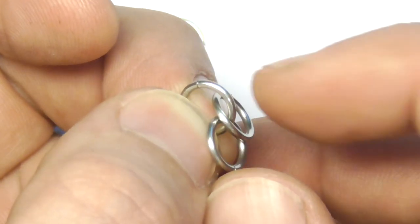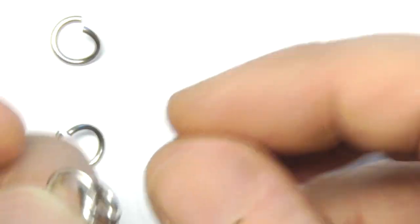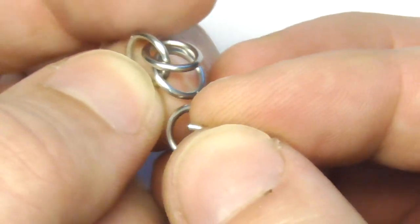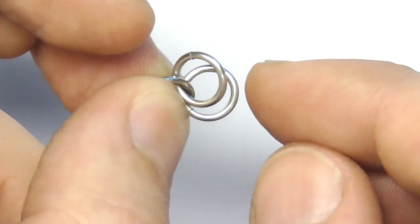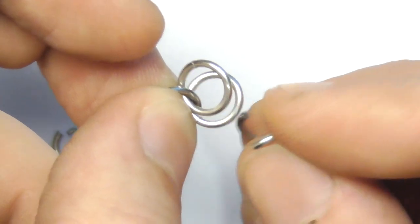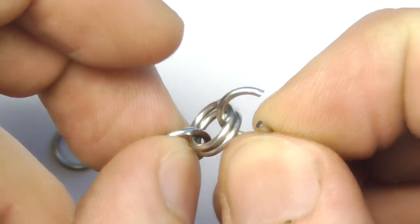Now let's take another open ring and let's put it here through these two closed rings. Like that. Now let's close this ring too.